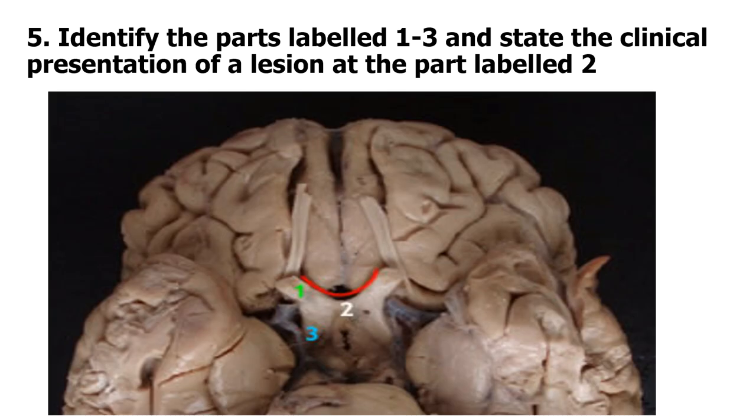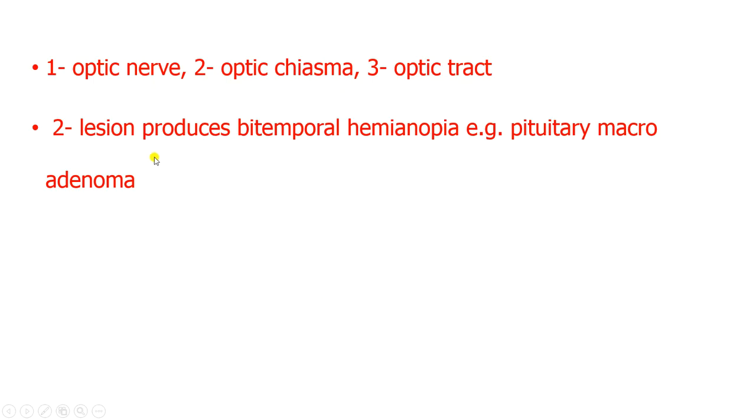So this shows you the base of the brain. You can see the olfactory tract there, as before it splits into the lateral and the medial stria. Then you can see the optic nerves there, and this is the optic chiasm, and these are the optic tracts. So you have the nerve there, the chiasm at 2, and then you have the tract. So the lesion at the point level 2, that is the optic chiasm, will give what we call bitemporal hemianopia.